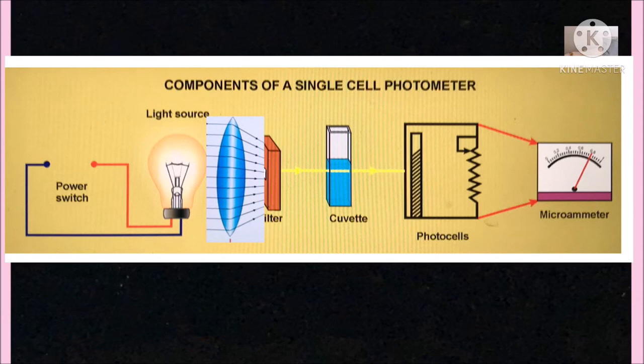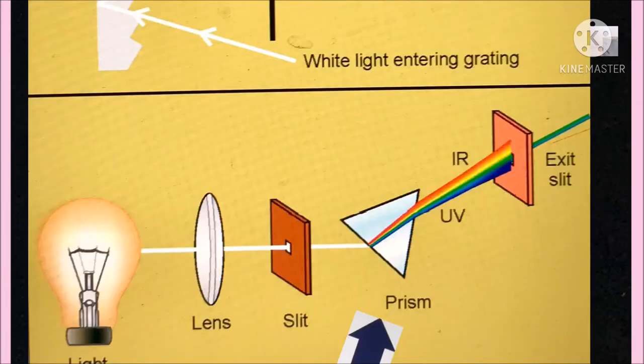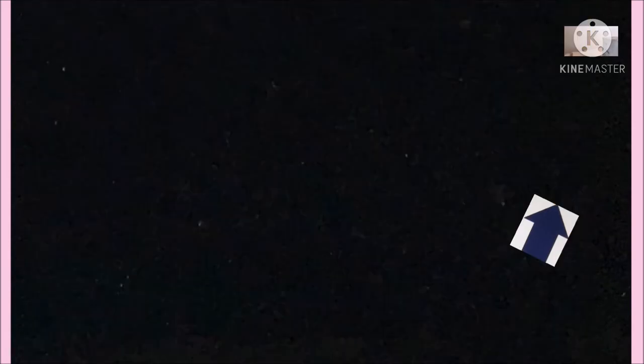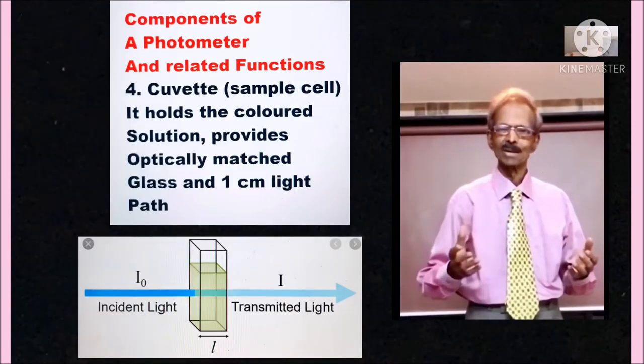Monochromators are used in case of a spectrophotometer which transmit very narrow wave band equal to 1 nanometre by using a prism and a slit as shown on the left hand side.